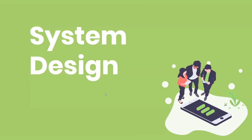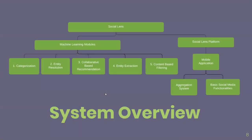Our system consists of two main components: the machine learning modules and the mobile application. For the machine learning modules, we have: the categorization module, which categorizes posts based on content; the entity resolution module, which matches the same users from different platforms; collaborative-based recommendation, which recommends posts based on user interaction; the entity extraction module, which analyzes content to extract entities; and content-based filtering, which filters and groups similar posts together. The second component is the mobile application where the user interacts with our system.